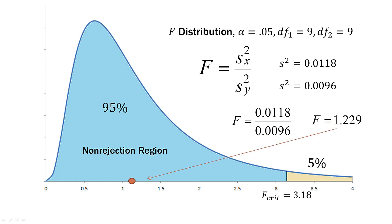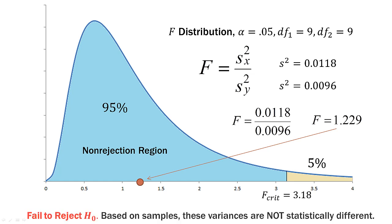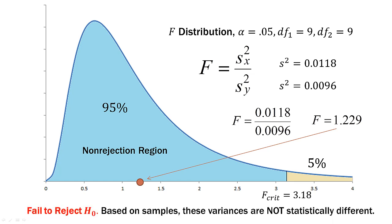So that falls way down here in our non-rejection region. So what do we conclude? So in this case, we will fail to reject the null hypothesis. So based on these samples, the variances are not statistically different.